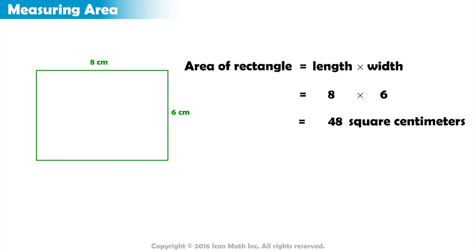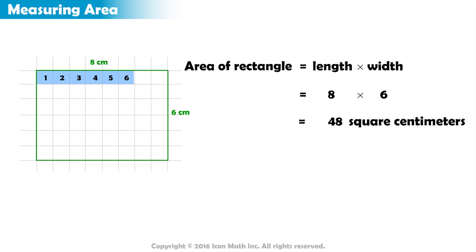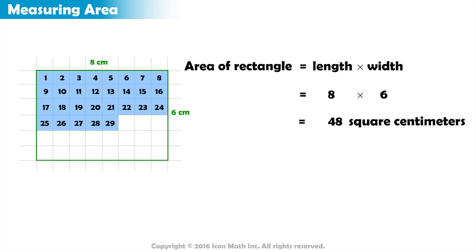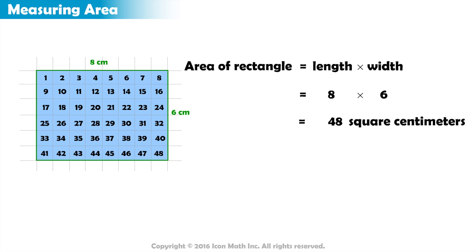We can check if we are right by putting our rectangle on a square centimeter grid. Counting the total number of square centimeters that cover the rectangle without overlaps, we get 48 square centimeters. So our answer is correct.